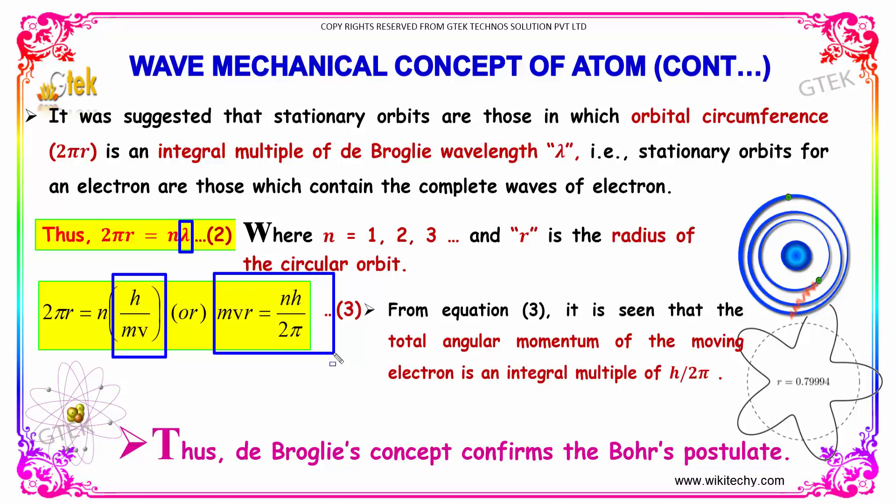This is the equation we got. It is seen that the total angular momentum of the moving electron is an integral multiple of h/2π. Thus, de Broglie's concept confirms Bohr's postulate.